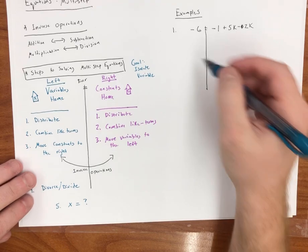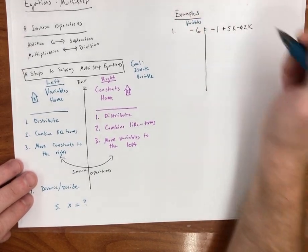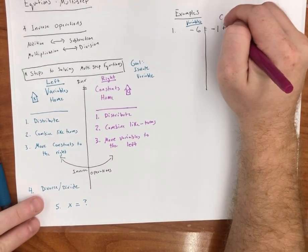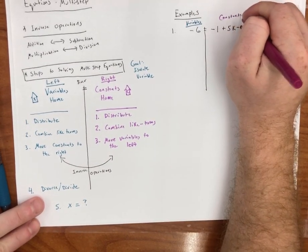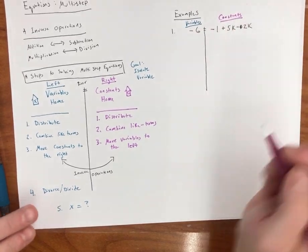Now I'm going to go ahead and label my left side variables and I'm going to label my right side constants. Remember, our variables are going to the left and our constants are going to the right.